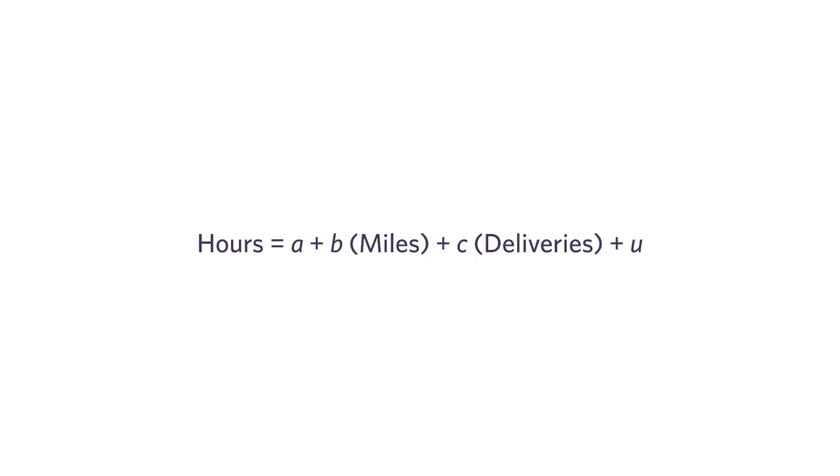The computer can tell me what A, B, and C are. The noise represents things that affect the hours — the travel time — other than miles and deliveries. So things like my driver got pulled over and inspected, or he spilled a cup of coffee on himself and had to stop, or he had a fight with his wife and took a wrong turn. All these little pieces of noise that will influence hours get lumped into that term. I want to blow all of that away so I'm looking at this pristine relationship — just the relationship between miles, deliveries, and hours.